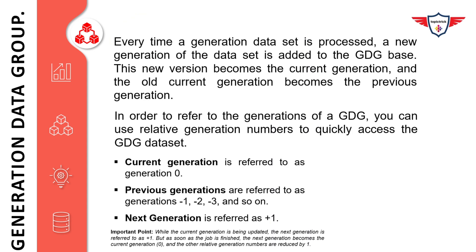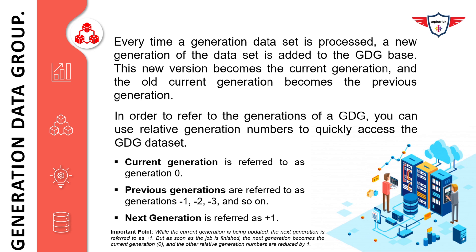A quick recap: every time a generation data set is processed, a new generation is added to the GDG base. The new version becomes the current generation and the old current generation becomes the previous generation. Use relative generation number 0 for the current generation, minus 1, minus 2, minus 3 and so on for previous generations, and plus 1 for the next generation. Important: while the current generation is being updated, the next generation is referred to as plus 1. But as soon as the job is finished, the next generation becomes the current generation (0), and all other relative generation numbers are reduced by 1.